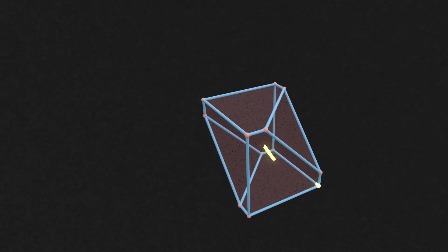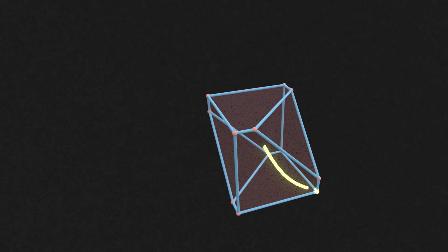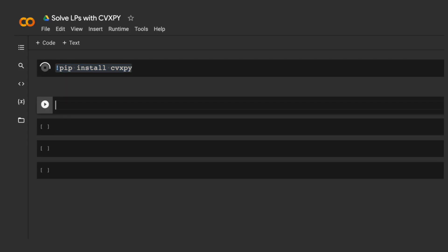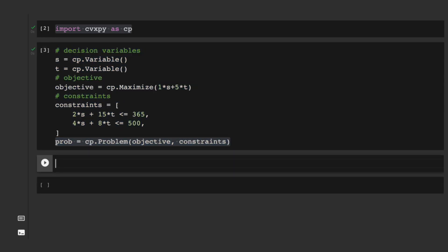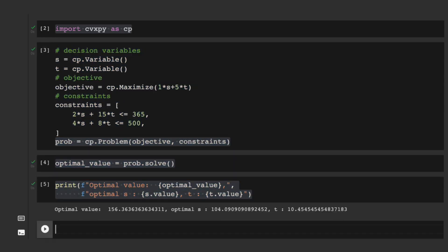goes directly through the interior of the feasible set towards the optimal solution. To solve a linear program in Python, install the package cvxpy, import it, describe your problem, and call the solve method to get the optimal solution.